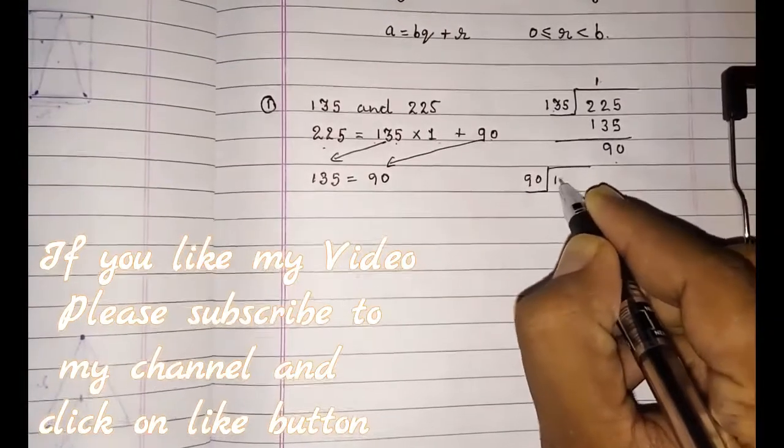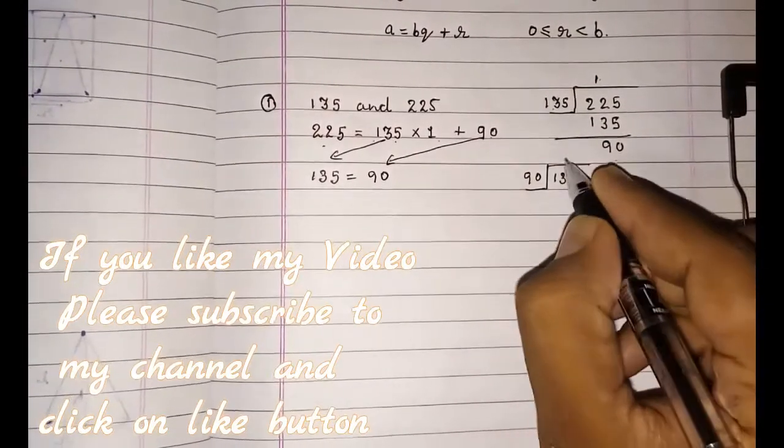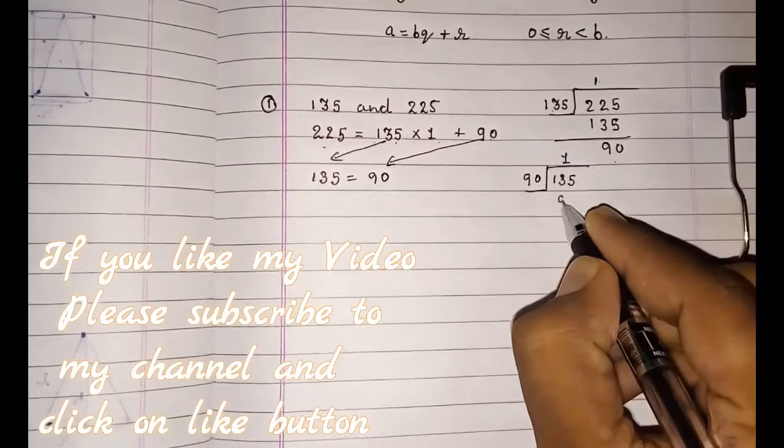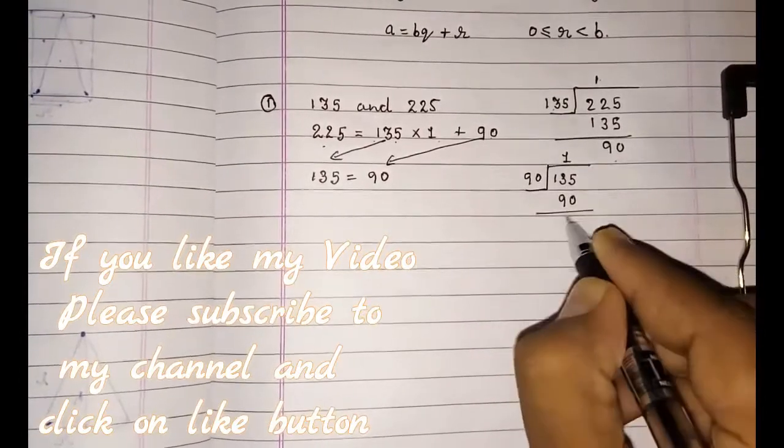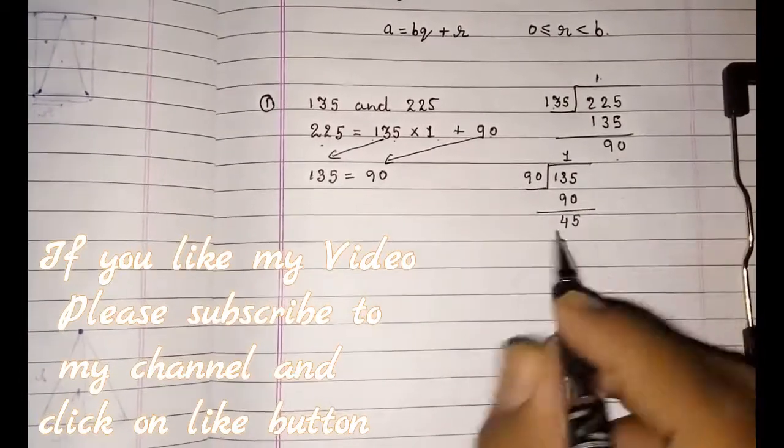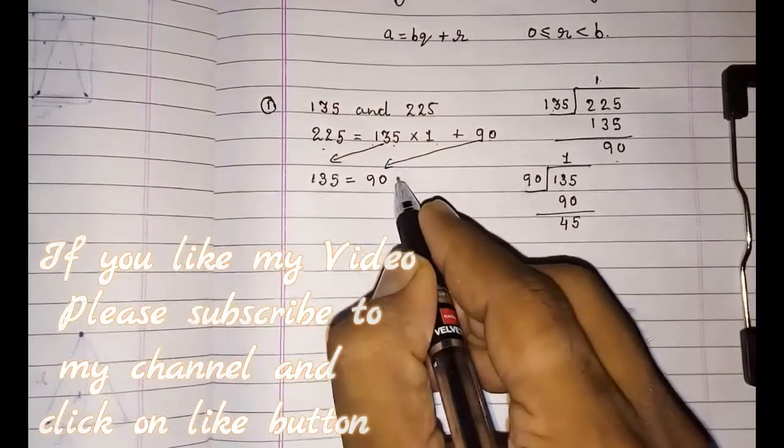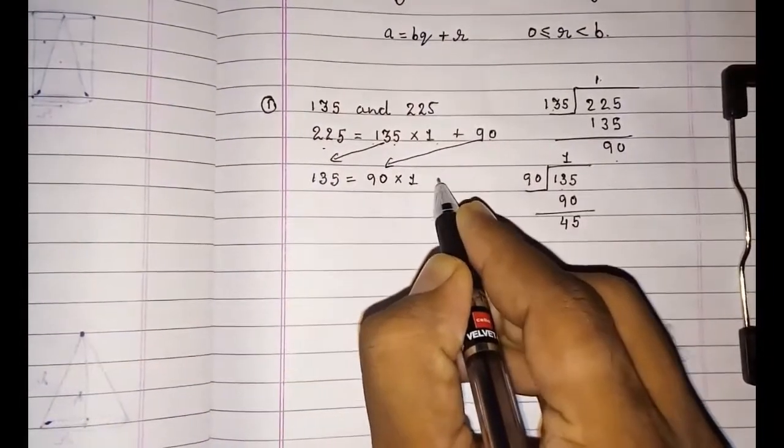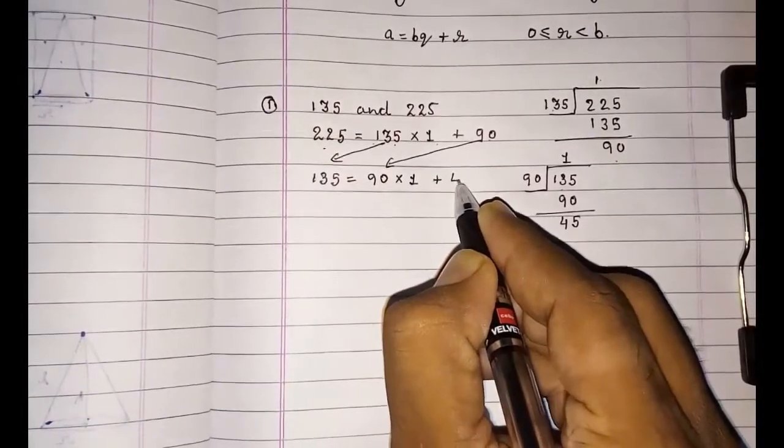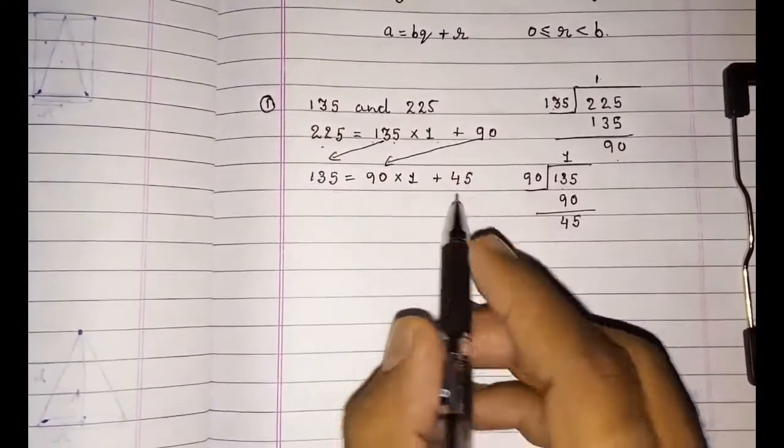90 into 135: one times 90, remainder 45. Again same thing: a, b, q, r. So 90 = 90 × 1 + 45.